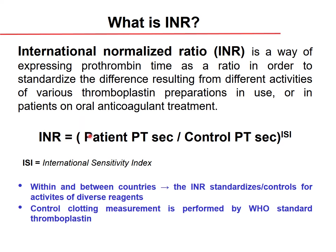The INR is calculated as: patient prothrombin time divided by control prothrombin time, raised to the power of the ISI (International Sensitivity Index), which is specific to the thromboplastin being used. Because thromboplastin collected from different sources can vary slightly, the ISI correction standardizes the result across different reagent lots and companies.